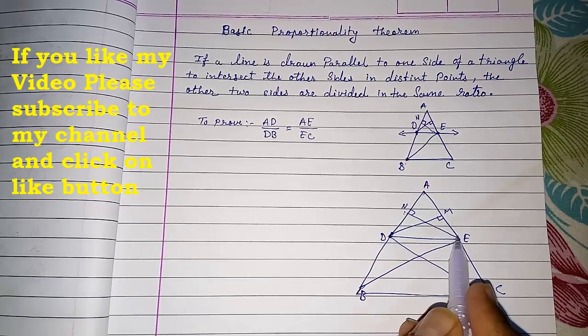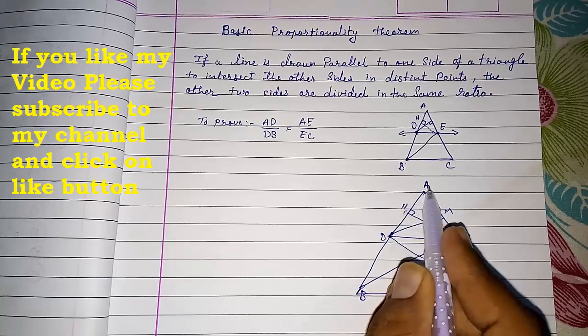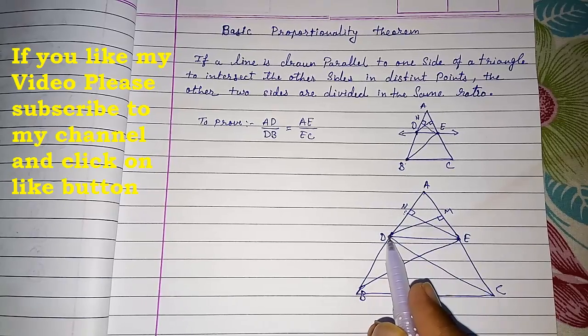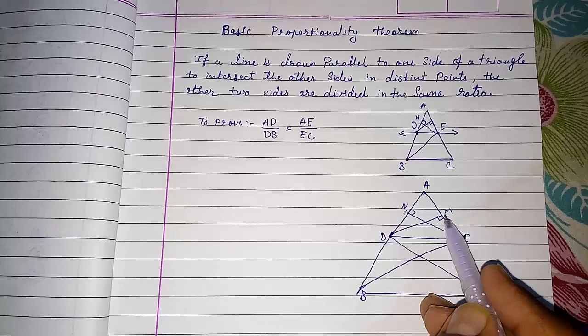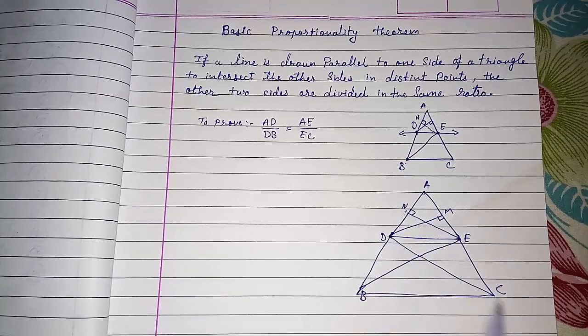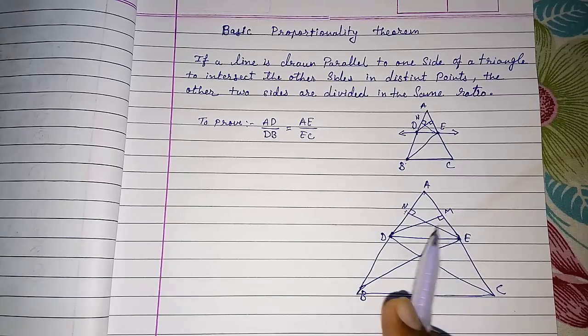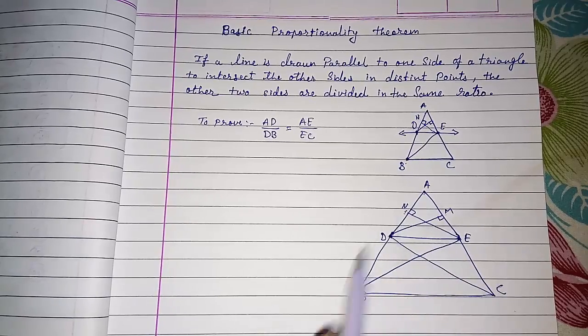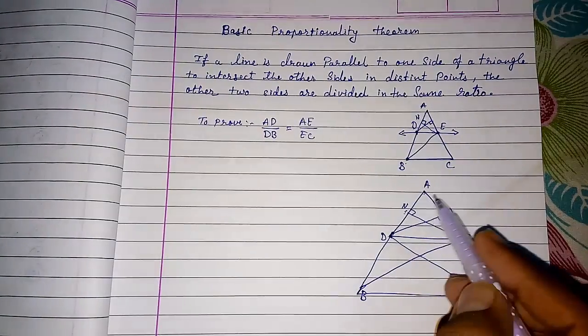DEC means NE is height of triangle ADE and triangle DEB, and DM is height of triangle ADE and DEC. This you have to make it little bit clear so that you come to know. Now we want to prove AD upon DB here equals to AE upon EC.